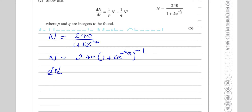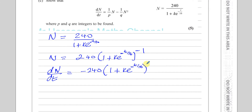Using the chain rule, we differentiate with respect to t to find dn/dt. First, multiply by the power: minus 1 times 240 gives minus 240. Then you have the bracket as it is, but take 1 away from the power — just like when you differentiate normally: multiply the power, take 1 away from the power. But as there's a function inside this bracket, we also have to multiply by the differential of what's inside the function, which is k e to the power of minus t over 16, with respect to t.